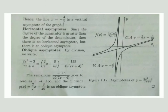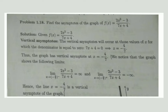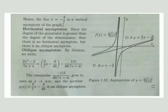Next we check for horizontal asymptotes. Observe that for f(x) = (2x² - 3)/(7x + 4), the degree of the numerator is greater than the degree of the denominator. So we can say there is no horizontal asymptote. When there is no horizontal asymptote, an oblique asymptote will apply.